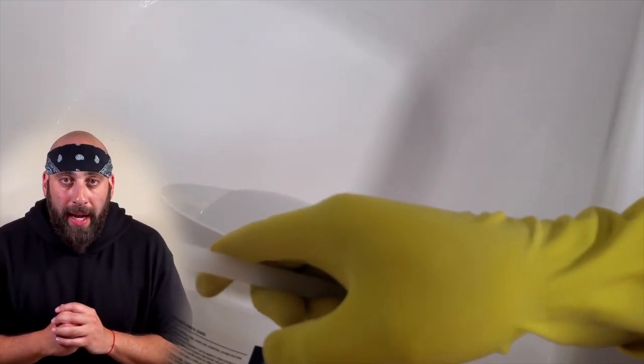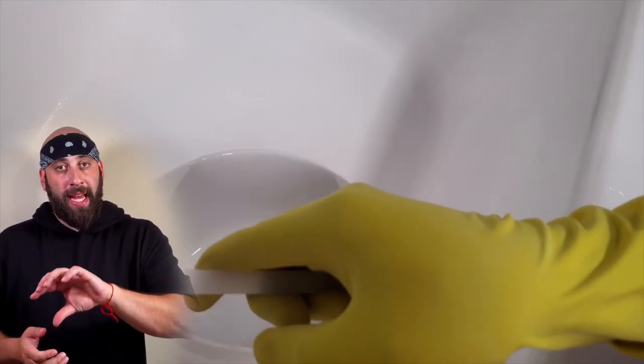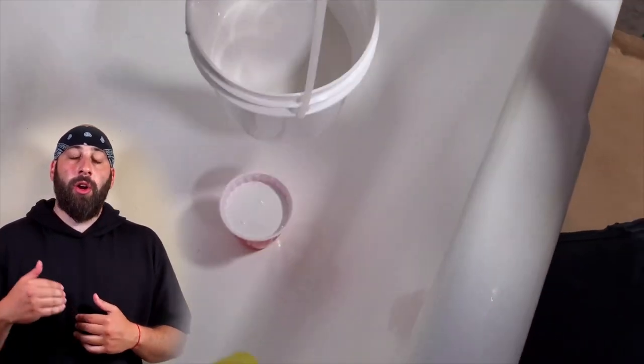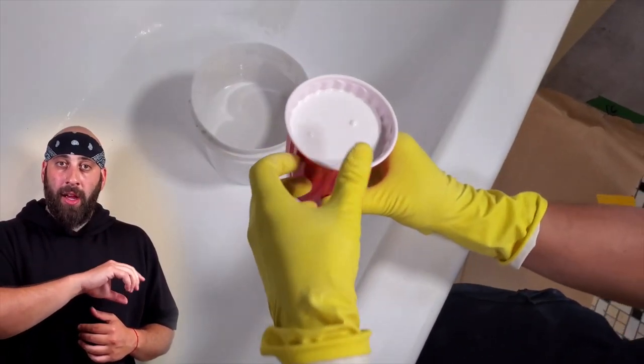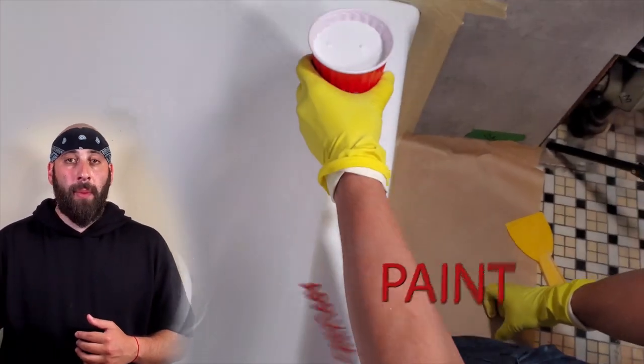So we're ready to start painting. You're going to want to pour your paint into your cup and then we're going to start on the inside of the tub. So starting from the back, pour your paint along the top edge.